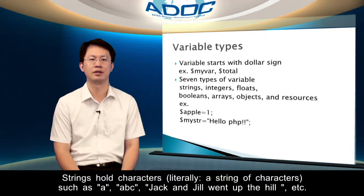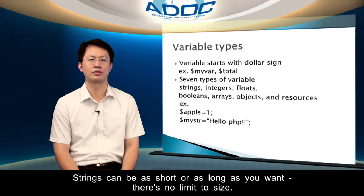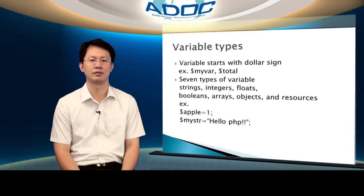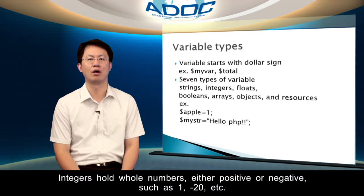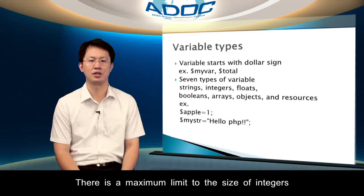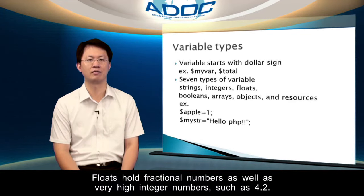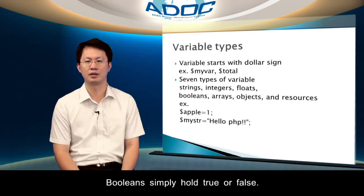Strings hold characters — literally a string of characters — such as 'A', 'ABC', 'Jack and Jill went up the hill', etc. Strings can be as short or as long as you want; there is no limit to size. Integers hold whole numbers, either positive or negative, such as 1, negative 20, etc., and there is no limit to size. Floats hold fractional numbers, as well as very high integer numbers, such as 4.2. And booleans simply hold true or false.